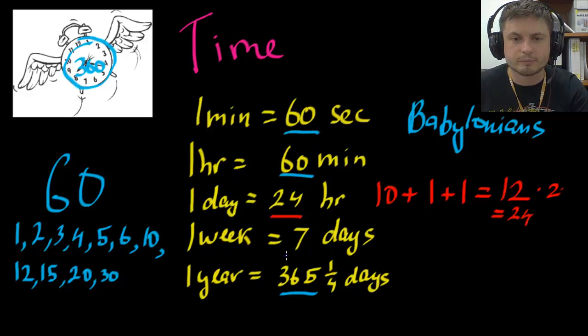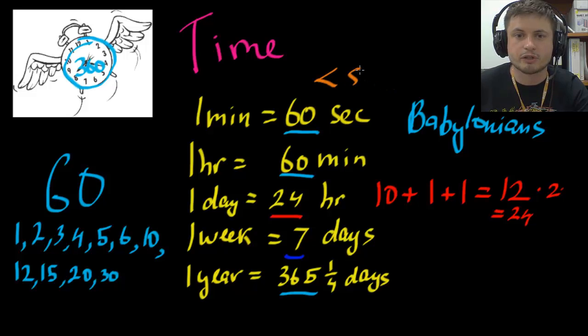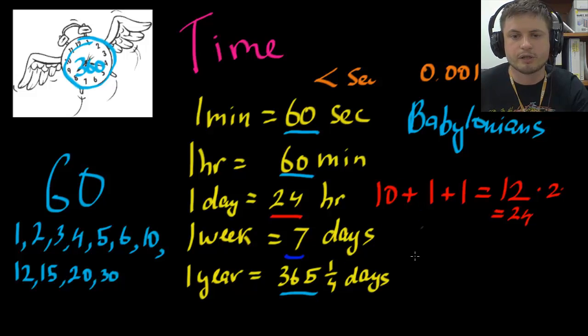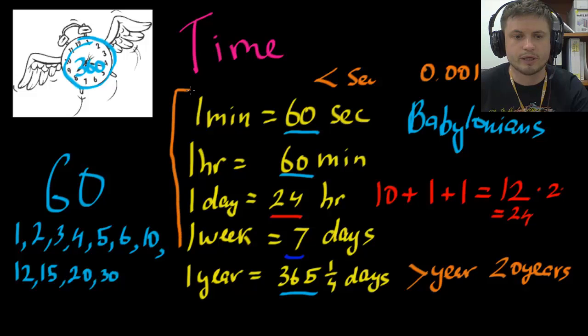Then 7 days is actually from Judeo-Christian beliefs of the creation. So 7 days of creation are in the Bible, and that's how we measure our time. Now anything below a second is measured in modern ways, basically with decimal points. So for example you can say 0.001 seconds. Anything above a year is also measured in decimal points. So everything above a year becomes also decimal, so like for example we say 20 years.